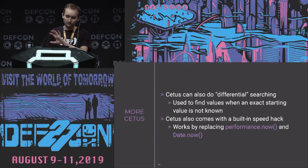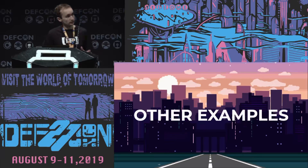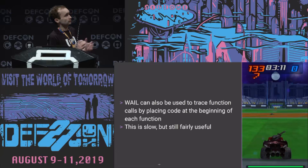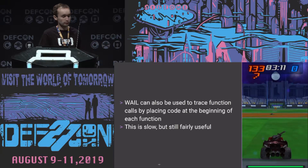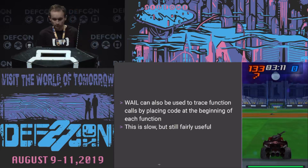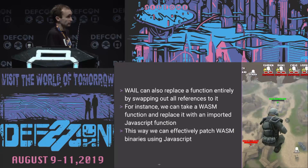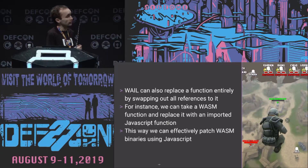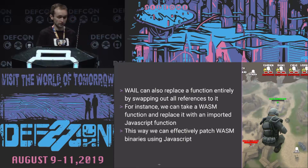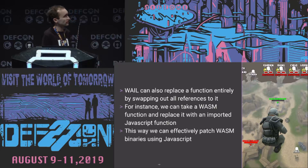With Cetus covered, I want to talk about other fun things you can do using WAIL — binary instrumentation on video games. The first is function tracing: injecting code at the start of each function that says 'I was called, I was called by this parent function.' It's pretty slow no matter how you do it, but it is useful. The next thing is replacing functions. Using WAIL, you can swap out all references to a function, basically replacing it entirely. One fun thing you can do is import a new JavaScript function and replace all references to an internal function with references to that JavaScript function — basically patching a WebAssembly binary with JavaScript.